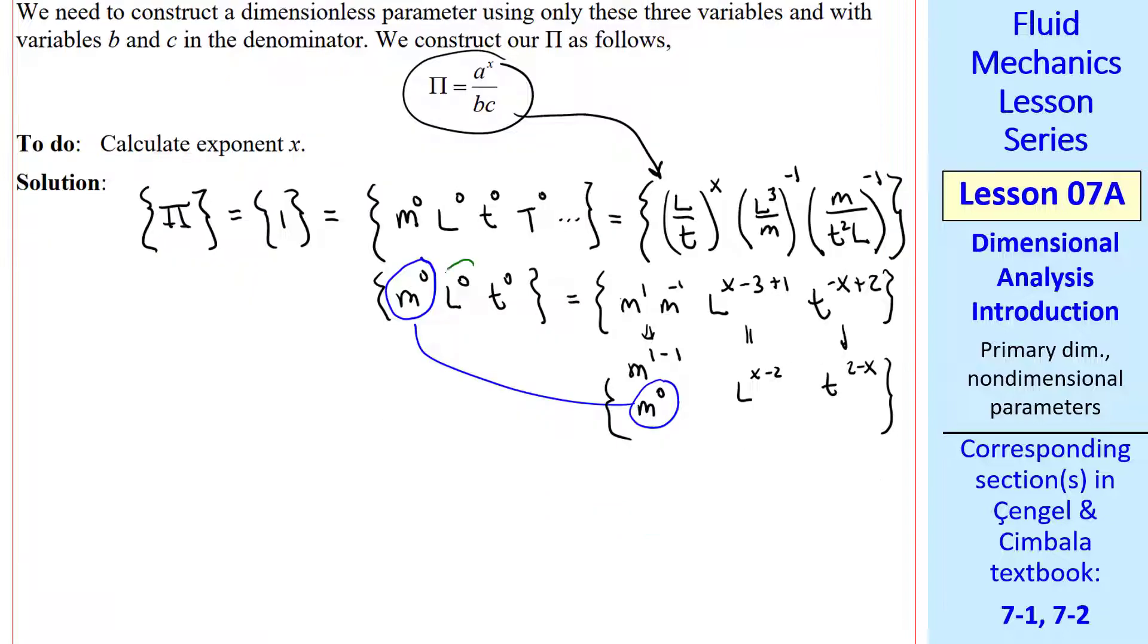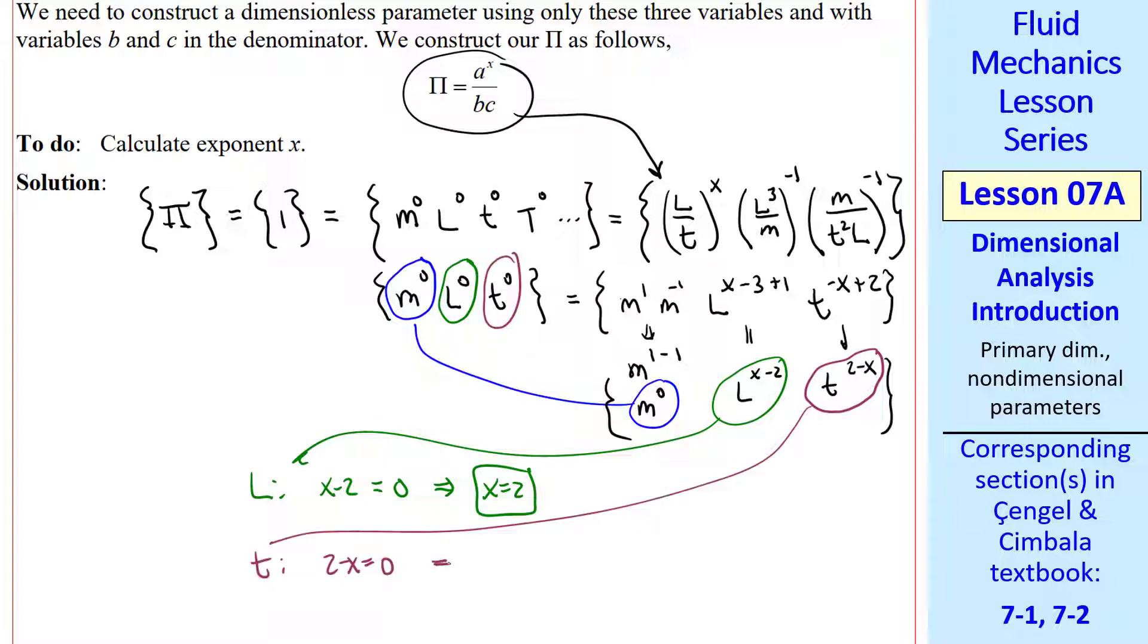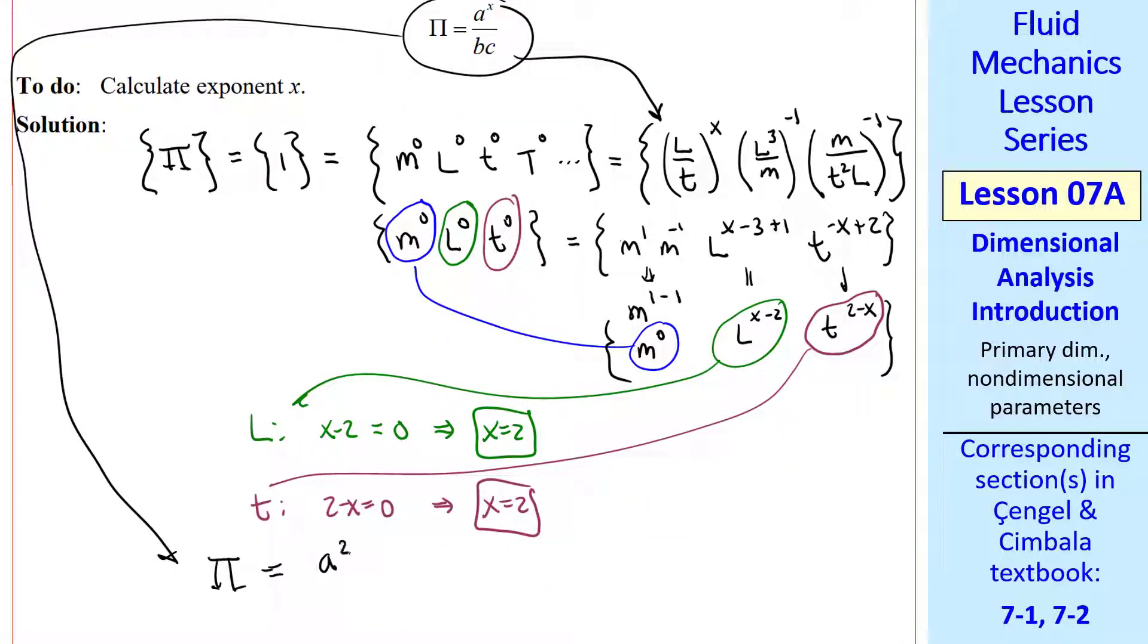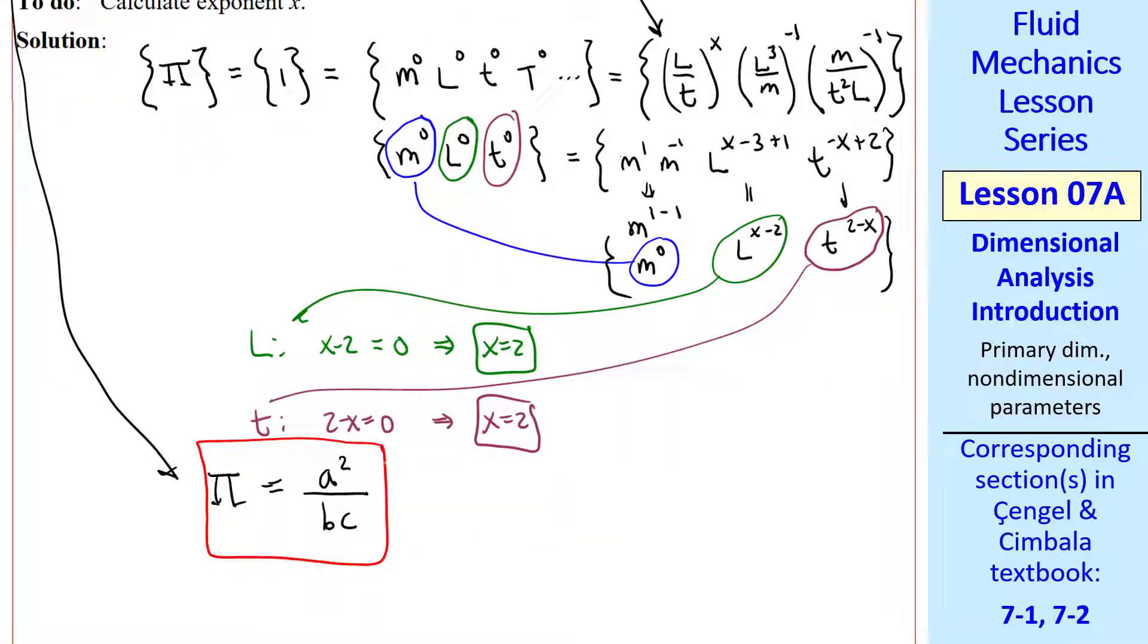We have to force the exponents of L to be 0. In other words, X minus 2 has to be 0, so X has to be 2. Similarly, we have to force the exponent of T to be 0, so 2 minus X equals 0, or again, X equals 2. Fortunately, these two give the same answer. If they did not, we'd be in trouble. And either we made an algebra mistake, or we cannot construct the pi as shown here. In our case, we can, since these are consistent, and our pi is A to the X, which is 2, over BC. So this is our final answer for pi, and our answer for X is 2.